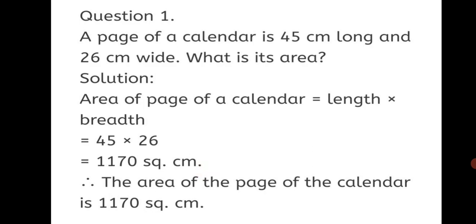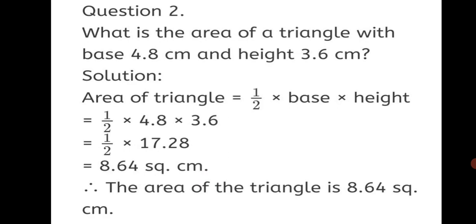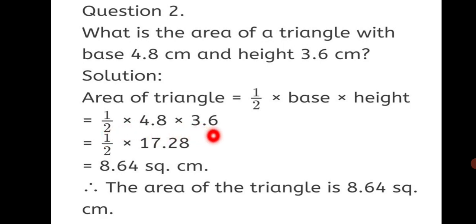In this sum we used the formula for area of rectangle. Question 2: What is the area of a triangle with base 4.8 cm and height 3.6 cm? We have to find the area of a triangle; its base and height are given. Area of triangle is equal to half into base into height. Substituting: half into 4.8 into 3.6.